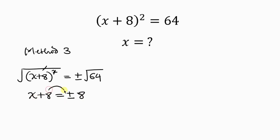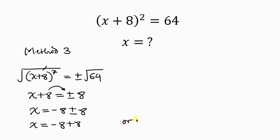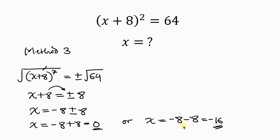To get X we move 8 to the right, so X = −8 ± 8. This gives two cases: X = −8 + 8 = 0, or X = −8 − 8 = −16. We have the same values again. Now let's verify that x = 0 and x = −16 are correct.